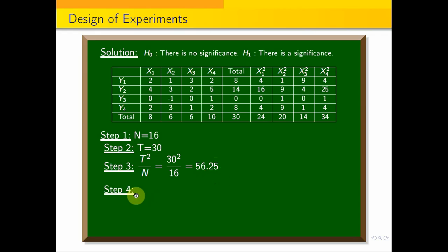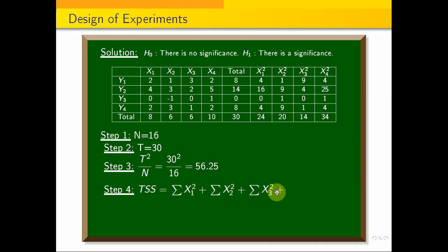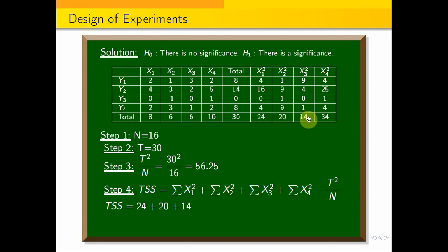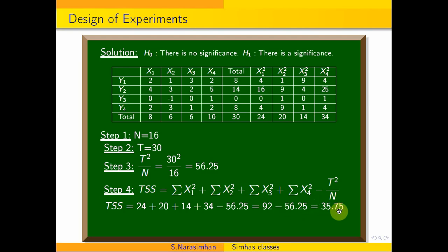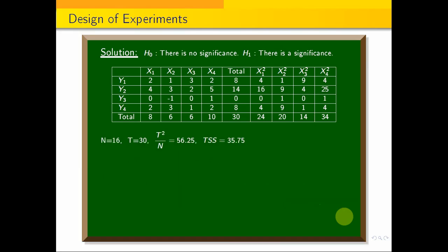Step 4: Total Sum of Squares (TSS). The formula is: summation of x1 squared plus summation of x2 squared plus summation of x3 squared plus summation of x4 squared, minus T squared by n. That equals 24 plus 20 plus 14 plus 34, minus 56.25. Using a calculator: 92 minus 56.25 gives TSS equals 35.75.